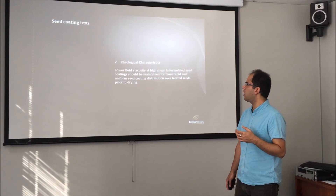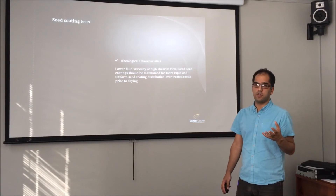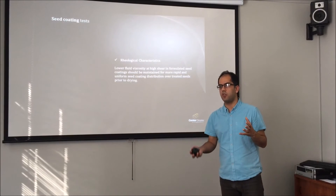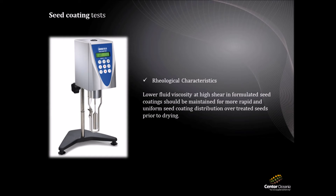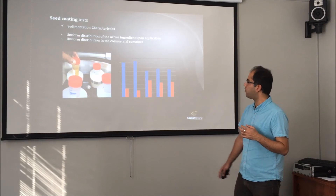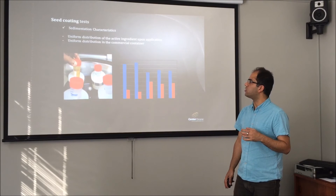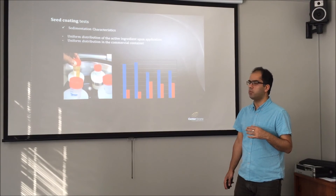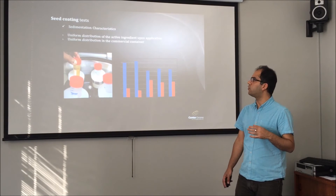The viscosity of the suspension should be low at higher shear rate, so that its application onto the seed becomes easy and fast. The rheological characteristics of the formulation are tested with a rheometer. The sedimentation characteristics are also tested, usually by centrifuge. In this test, the amount of liquid and solid of the total is determined. It is important to have uniform distribution of all components, which ensures uniform distribution of the components onto the seed.